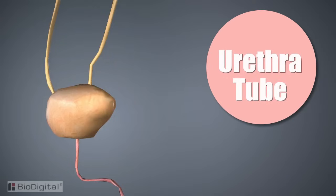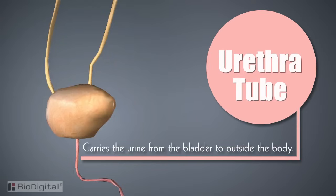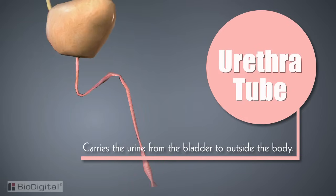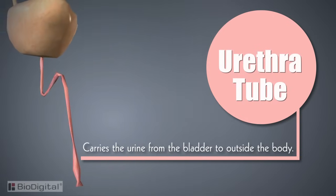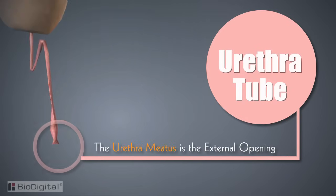Leading from the bladder is the urethra tube, whose job is to carry the urine from the bladder to the outside of the body. The last structure in the urinary pathway of purging toxins from the body is the external opening to the urethra, called the urethral meatus.